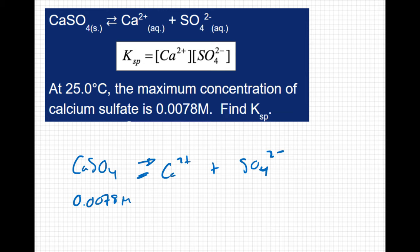If I know the concentration of the calcium sulfate is 0.0078 molar, well now I have to do a little stoichiometry. If I have 0.0078 molar calcium sulfate, what's my concentration of the calcium, and what's my concentration of the sulfate?